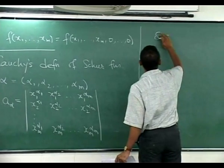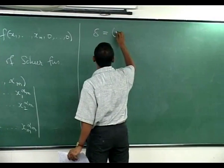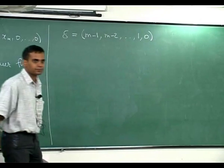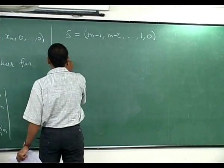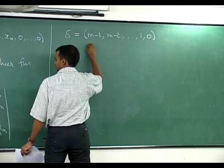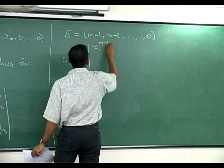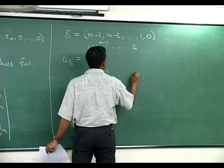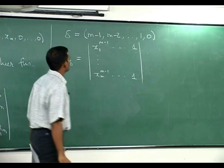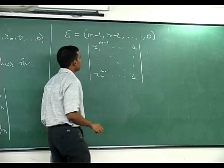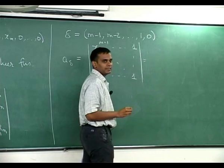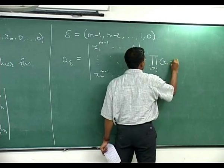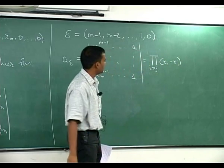Let us define delta to be the multi-index (m-1, m-2, ..., 1, 0). Then A_delta is the determinant where each row has powers decreasing from m-1 down to 0 - that is the Vandermonde determinant, which equals the product of (x_i - x_j) for i less than j between 1 and m.